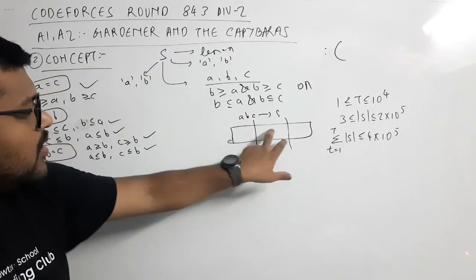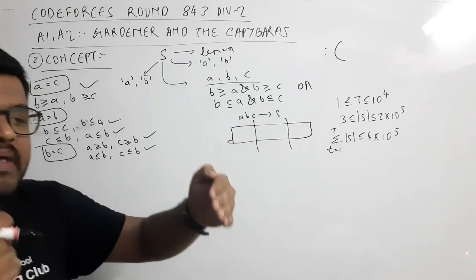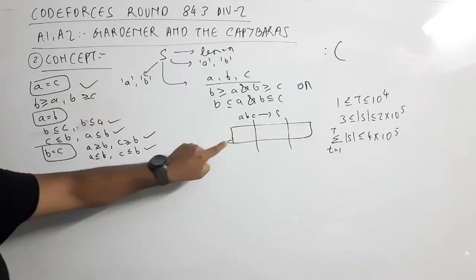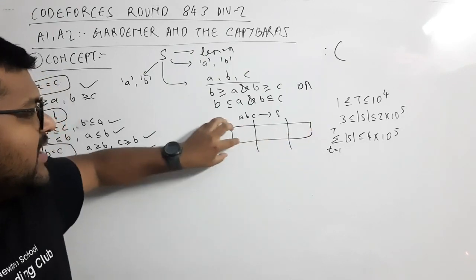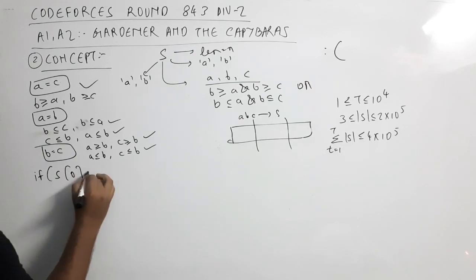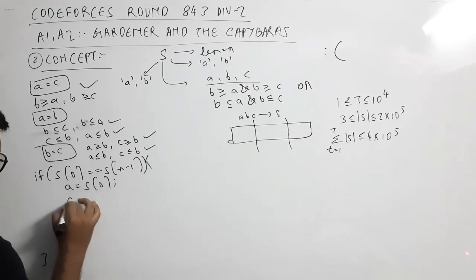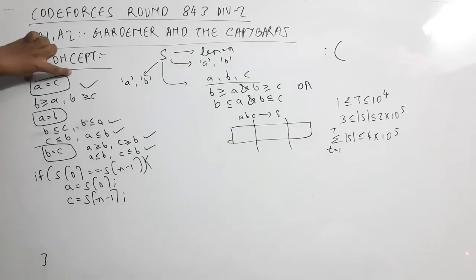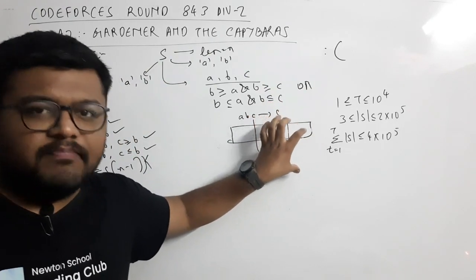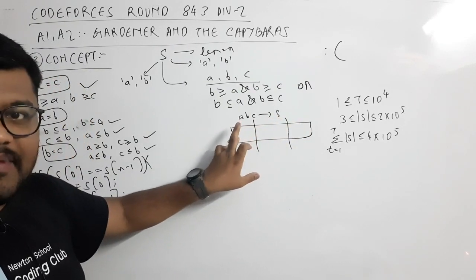Since A, B, C are written without spaces to form string S, A starts at index 0, B follows, and C ends at index n-1. If the first character S[0] equals the last character S[n-1], I can set A = S[0] and C = S[n-1], making A equal to C, and give the remaining middle portion to B.